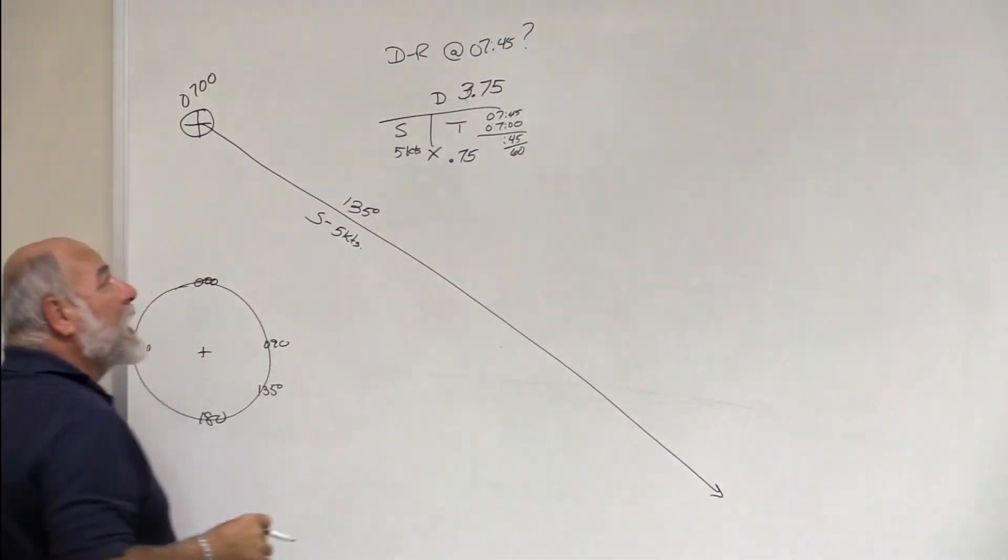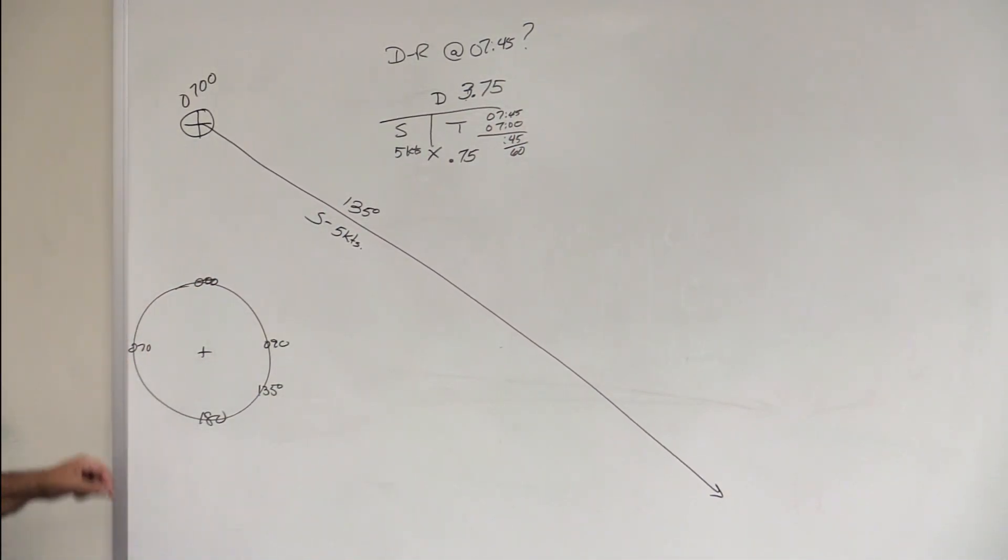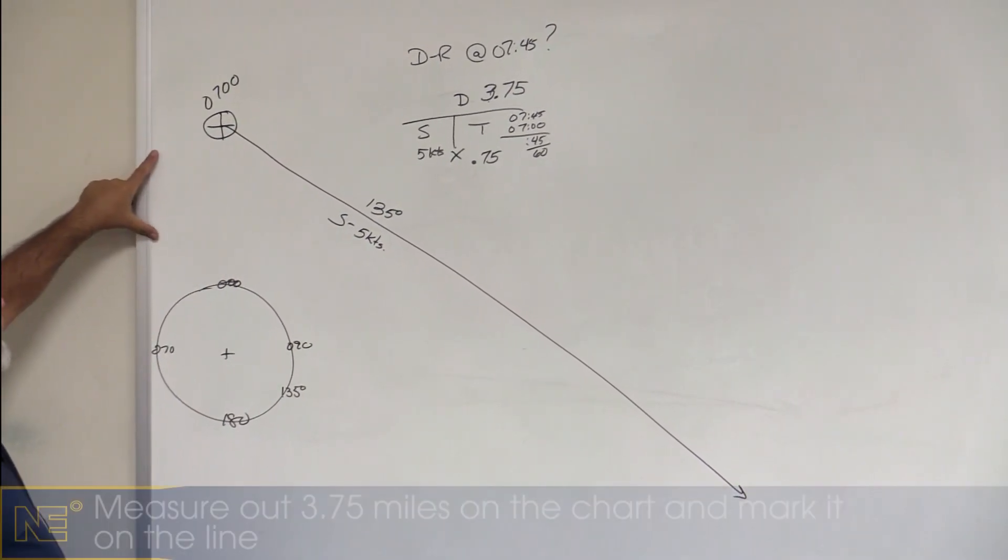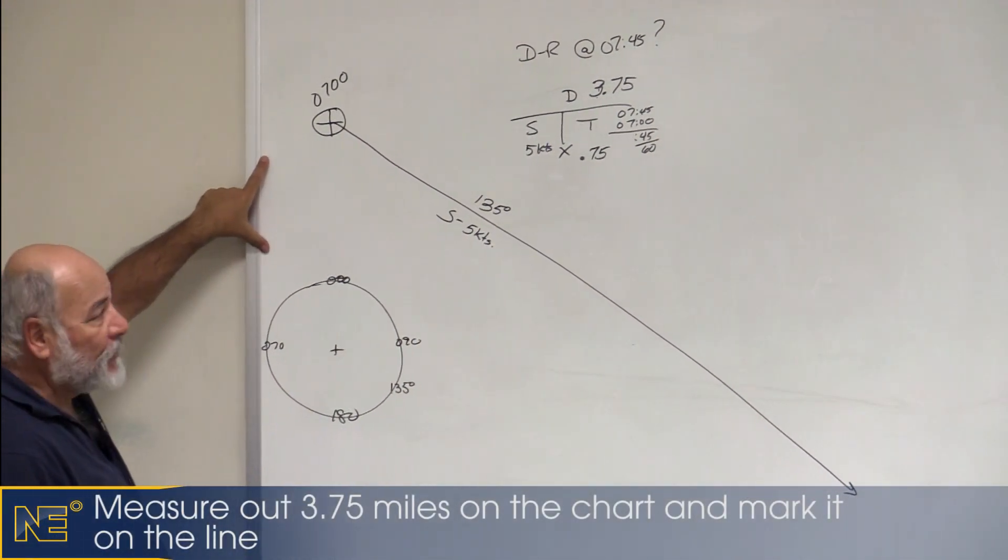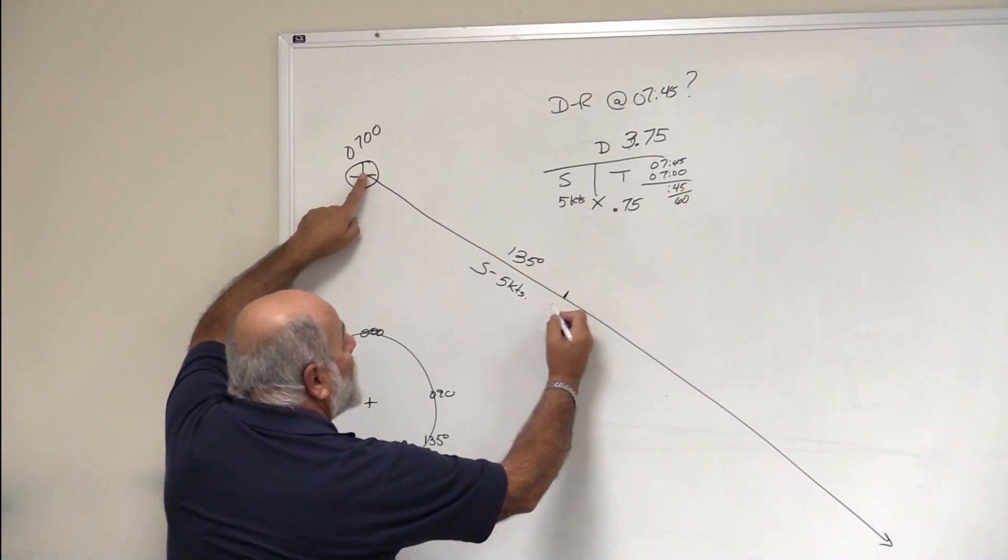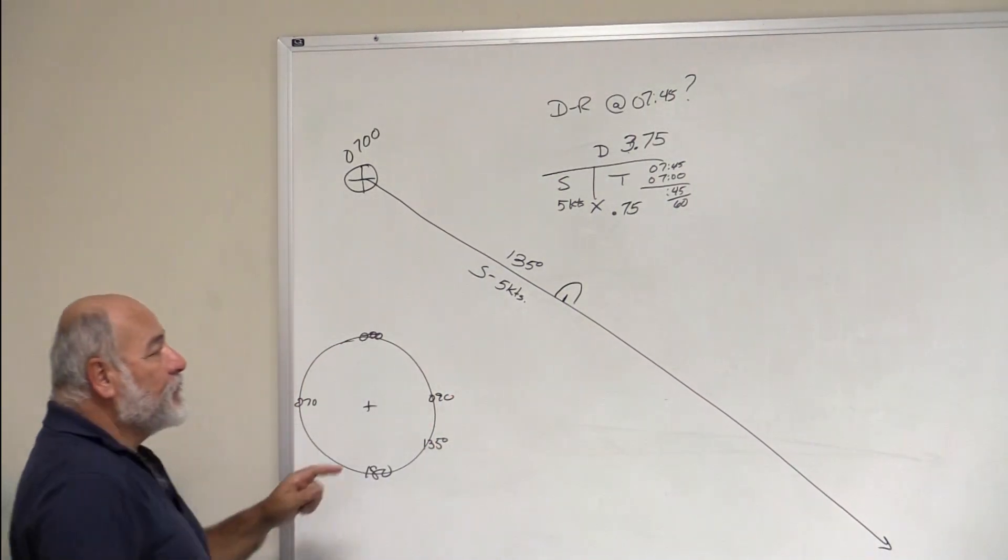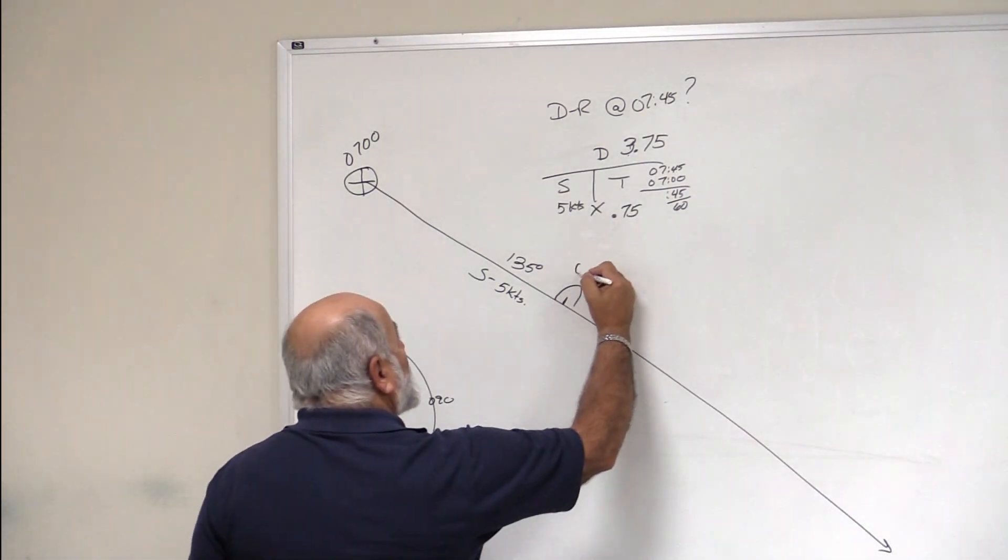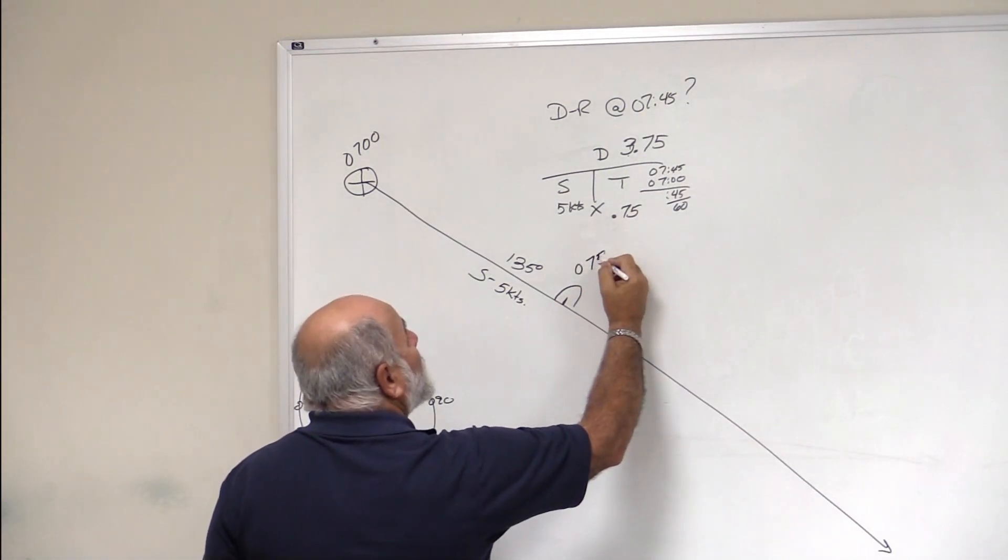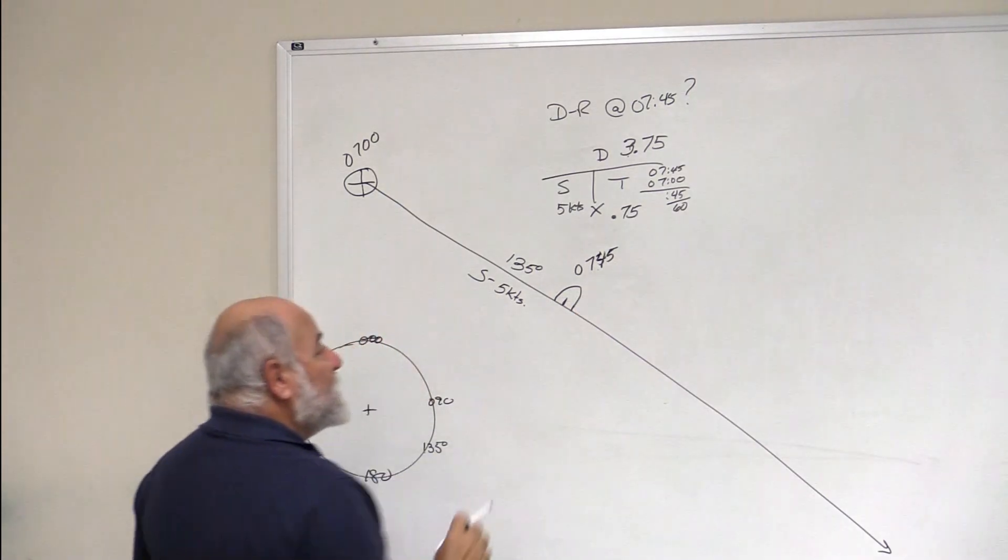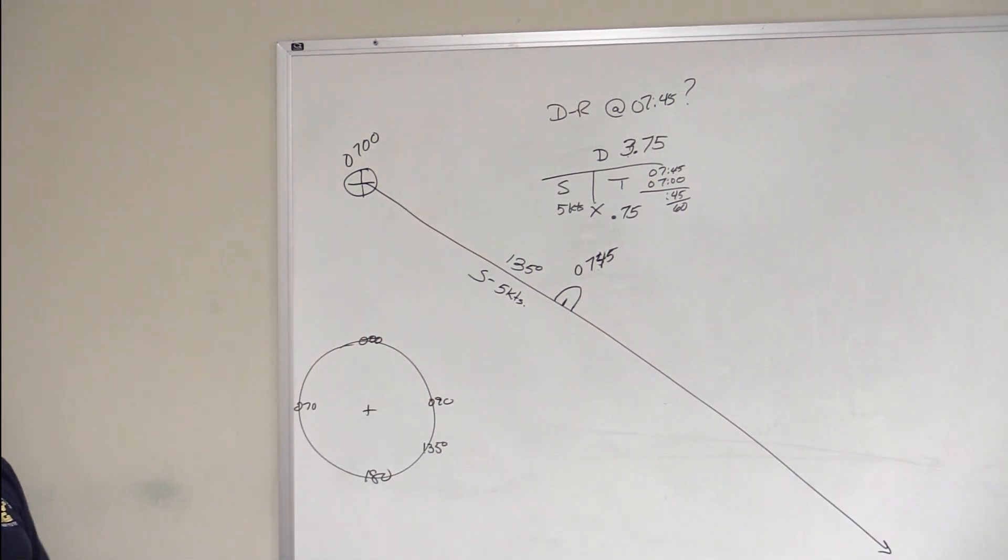That's how far we reckoned—we think we went in 45 minutes. We would get our dividers off the side of the chart. We'd mark off 3.75 miles. We'd put the pointy end here in our fix, and we'd make a mark 3.75 miles away. And the symbol for a DR is a line with a half a moon around it, and we put 0745 because that's our time, 7:45. That's our DR—that's where we reckon, we think, we figure we're going to be in 45 minutes.